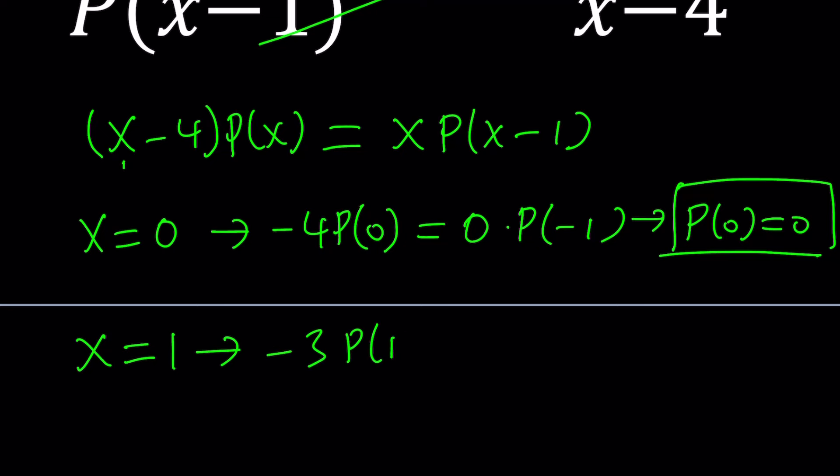Replace X with 1, you get 1 minus 4, which is negative 3, P of 1 equals 1 times P of 0. Now, we do know from the previous equation that P of 0 is equal to 0, so 1 times 0 is also 0, which means negative 3 times P of 1 is 0, but negative 3 is not 0, so P of 1 has to be 0.